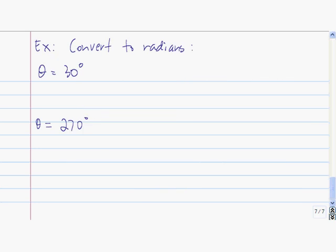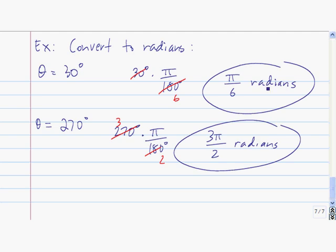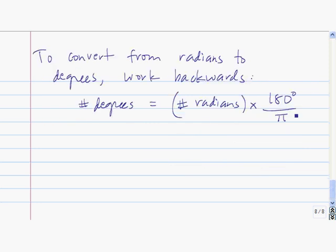Here are a couple to try. For the first one, 30 degrees times pi over 180: 30 goes into 180 six times, so we get pi over 6 radians. For the second, 90 goes into 270 three times and into 180 two times, giving us 3 times pi over 2. So 270 degrees is equivalent to 3 pi over 2 radians.